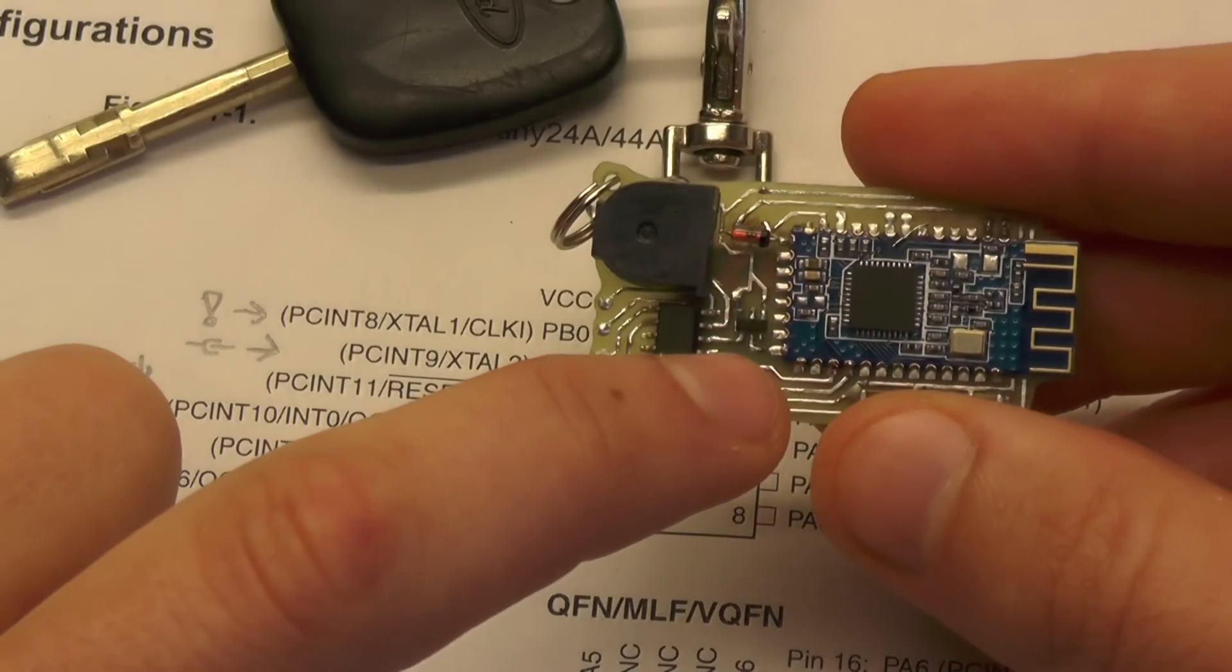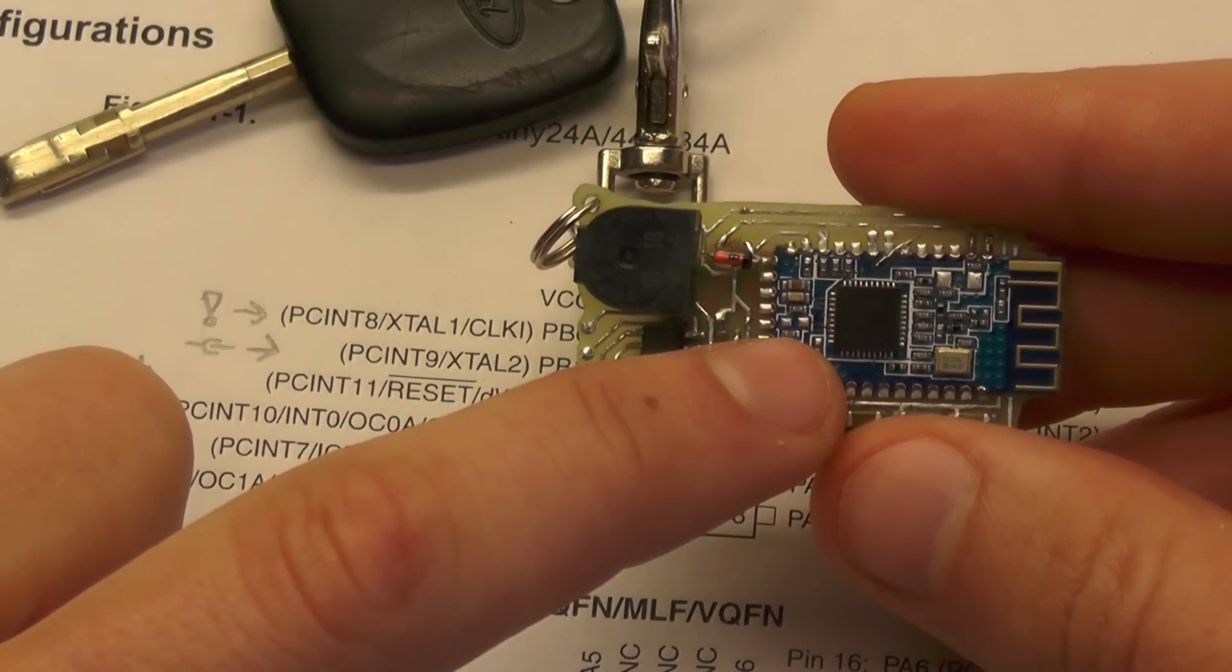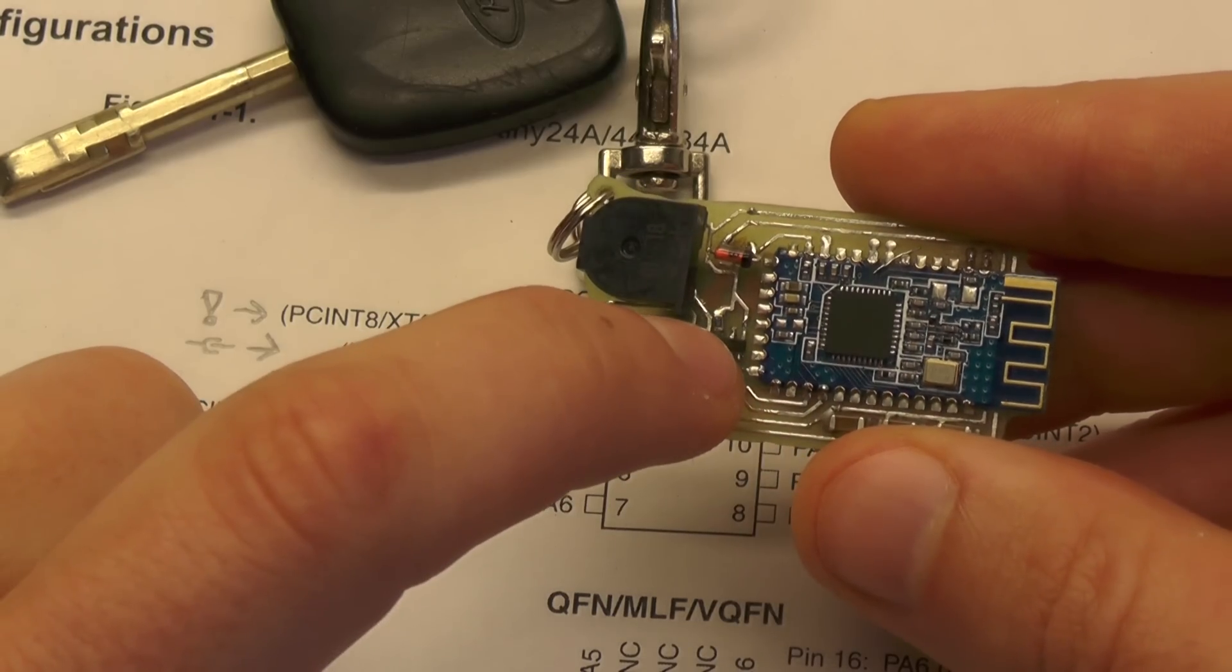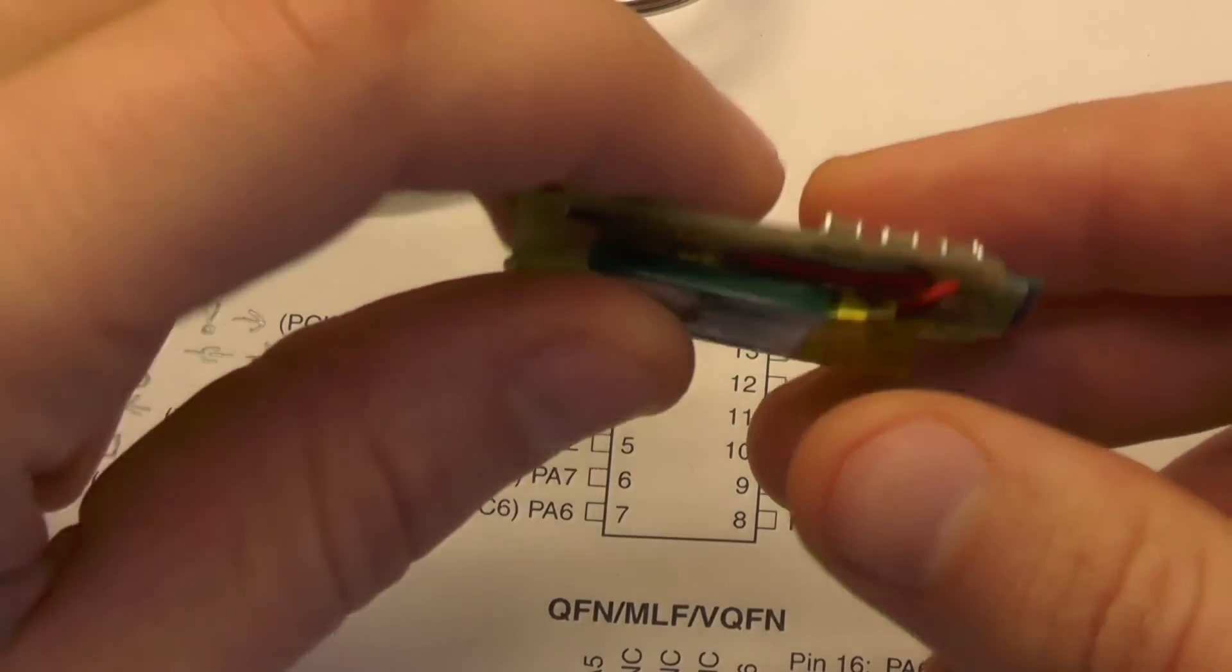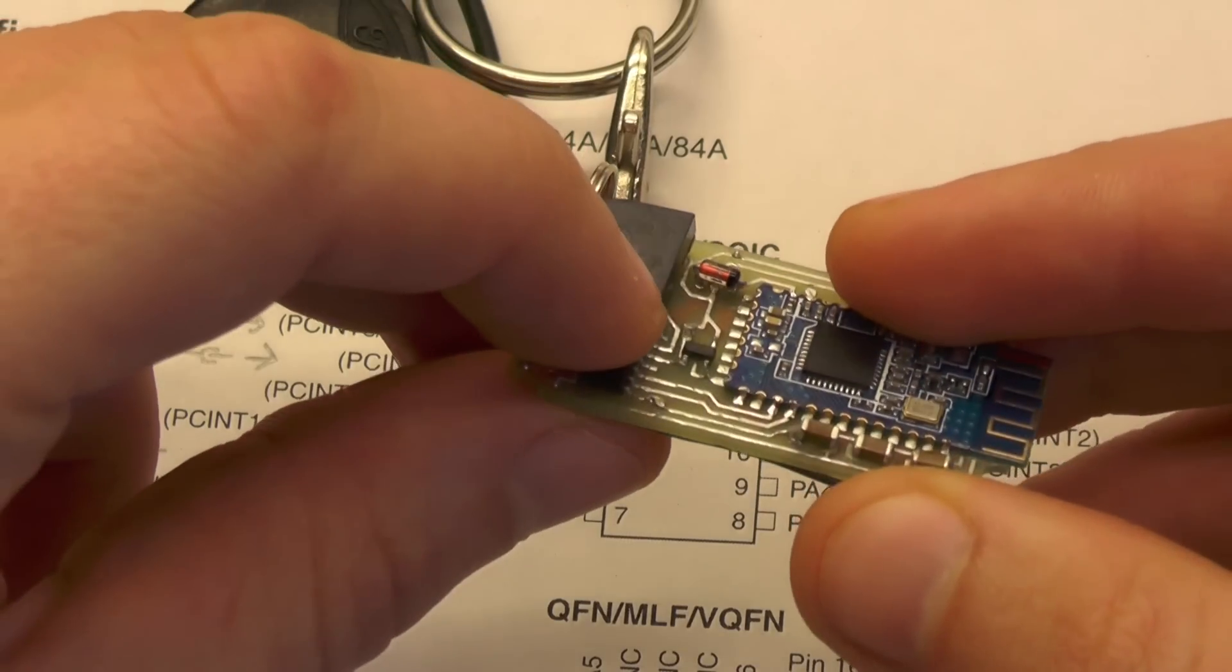PB2 is connected to the N channel MOSFET here. It is used to turn on the HM10 module from time to time. It's like a switch that is connected to the ground of the module. The gate is also connected to a pull down resistor. I have to charge the module with my bench power supply each 9 days. Let's check out how I build these things.